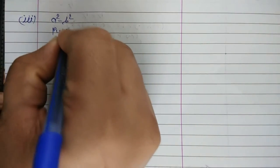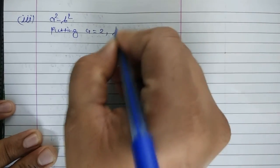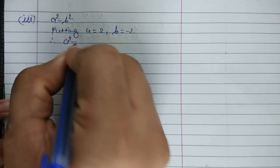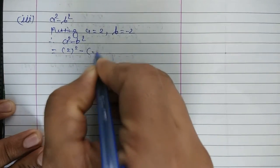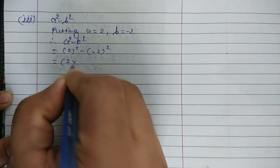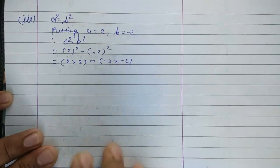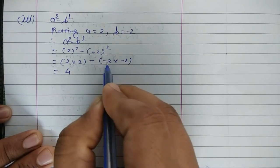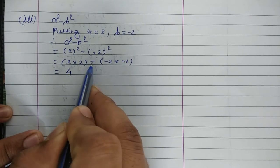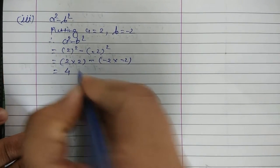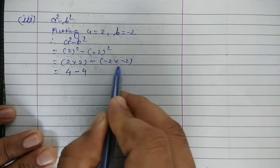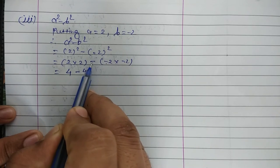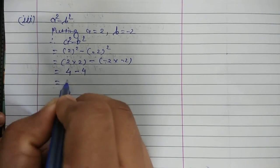Next expression: A square minus B square. Putting value of A equal to 2 and B equal to minus 2. Therefore expression A square minus B square is equal to 2 square minus minus 2 square. That is 2 multiplied by 2, minus minus 2 multiplied by minus 2. So 4 minus 4, and that is equal to 0.